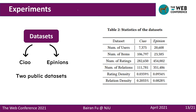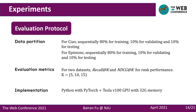For the experiment part, we conduct experiments on two representative datasets, Ciao and Epinions, which are taken from popular social network websites. Each social networking service allows users to rate items and add friends, hence providing a large amount of rating information and social information. We adopt Recall@K and NDCG@K to evaluate the performance of all methods. Recall@K considers whether the ground truth is ranked among the top K items, while NDCG@K is a position-aware ranking metric.